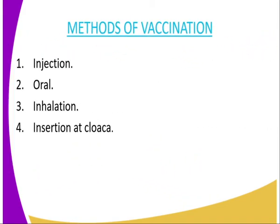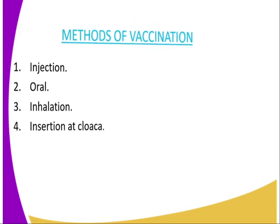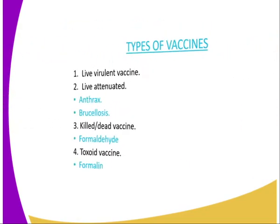The second method of vaccination is oral vaccination, where you introduce the vaccine through the mouth. Then we have inhalation, which is through the nose, and also insertion at the cloaca area when it comes to poultry.